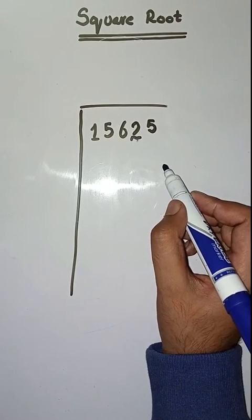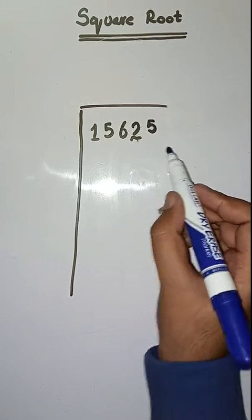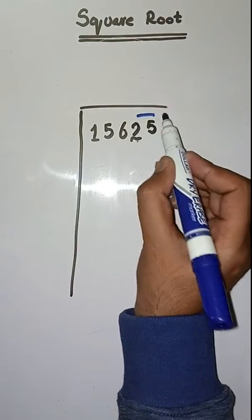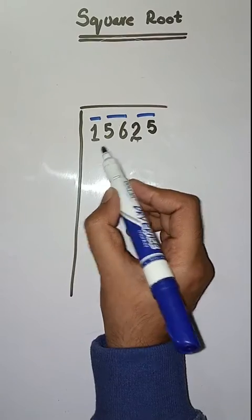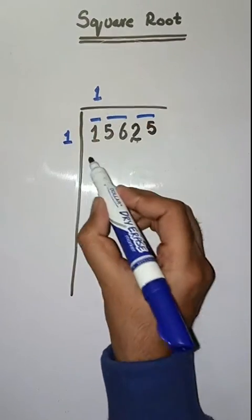So students, what will we do? First we have to make pairs from right to left like this: 25, 56, and 1. So first we have to solve 1. So we take a number of 1. 1 once is 1, minus, we get 0.